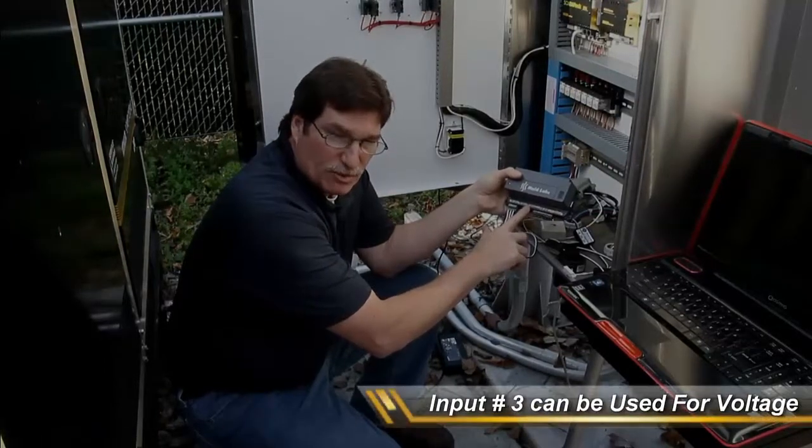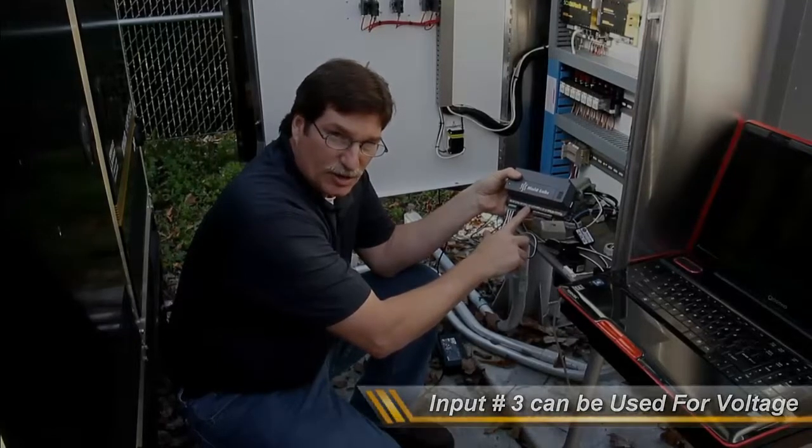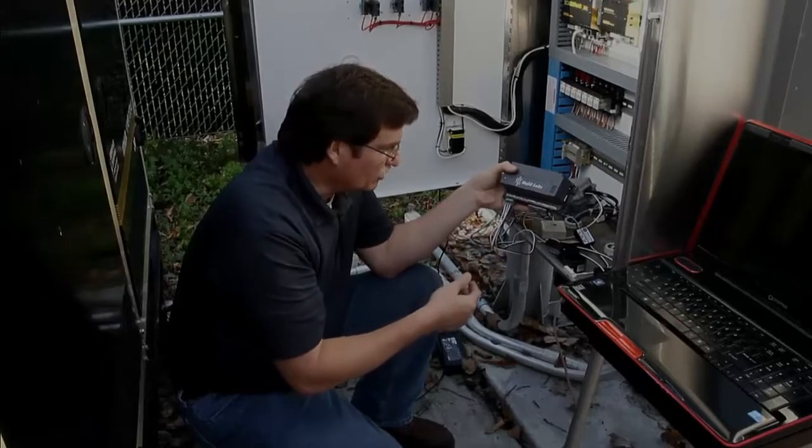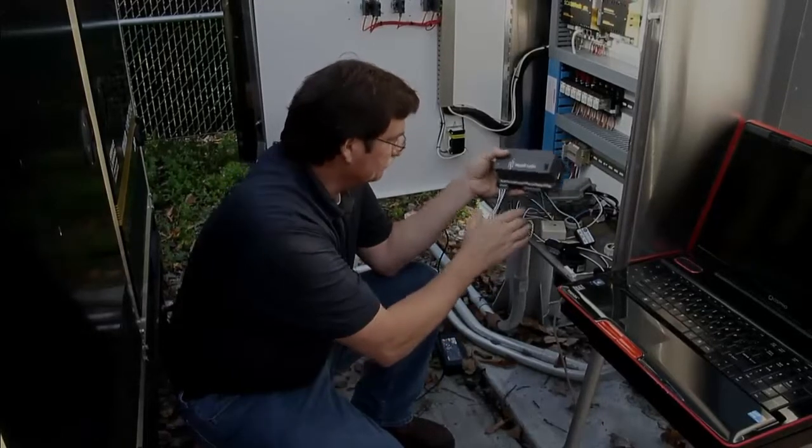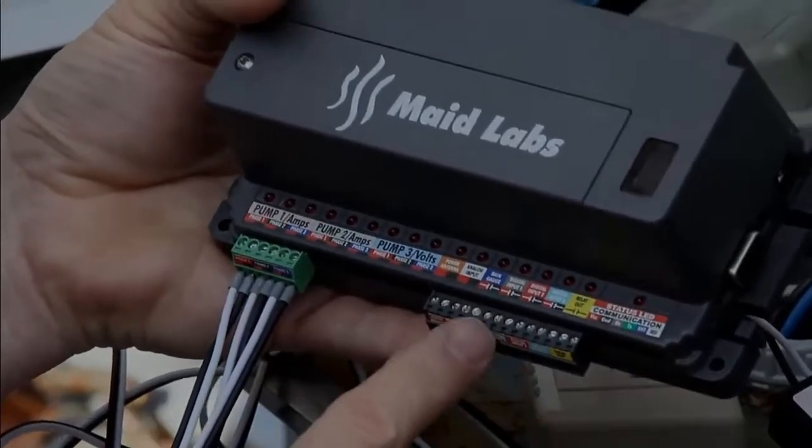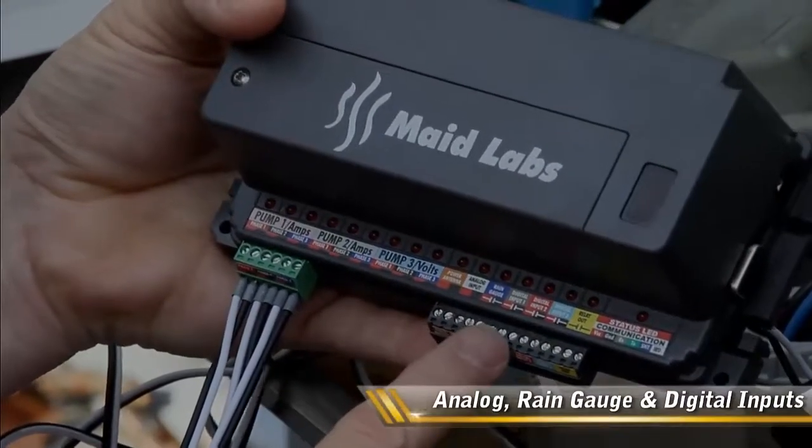Pump three on a duplex station we will monitor the voltage instead of monitoring the current, so we will constantly monitor voltage into the data logger and use that into our other inputs. We have an analog input, rain gauge input, and three additional digital inputs.